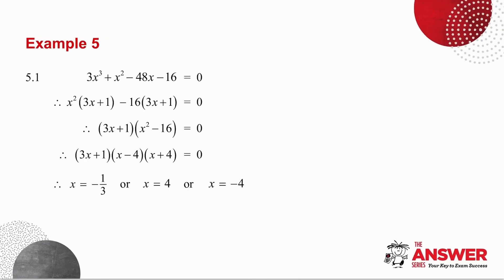In the first example what I can do is I can group it. So I can take the first two terms and take out a common factor of x squared, and I can take the last two terms and take out a common factor of minus 16. I then have a common bracket which I can take out of 3x plus 1 and I'm left with x squared minus 16.